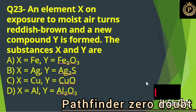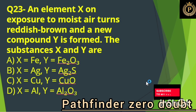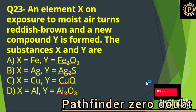An element X on exposure to moist air turns red-brown and a new compound Y is formed. The substances X and Y are: Option A, X is Fe and Y is Fe2O3.